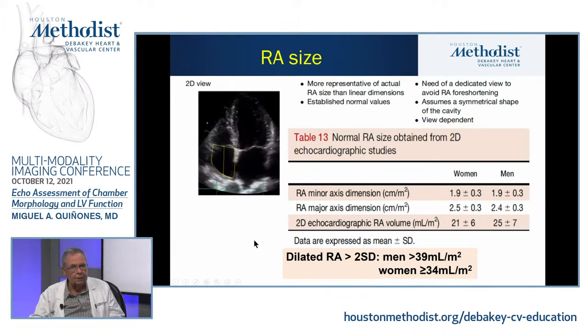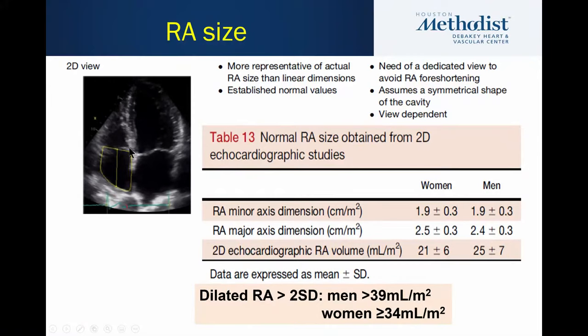For the right atrium, there is no biplane technique. The method is to obtain a good quality four-chamber view that enhances RV and RA, then trace the cavity at end-systole when the RA is at its maximal volume, and get a simple area-length volume measurement. For an enlarged RA using two standard deviations, roughly 34 mL/m² for women and 39 mL/m² for men. So here you do have to remember there is a difference between genders — a value of 37 mL/m² would still be normal for a man, but that same value would indicate a dilated RA for a woman.